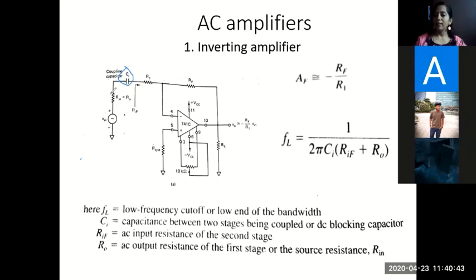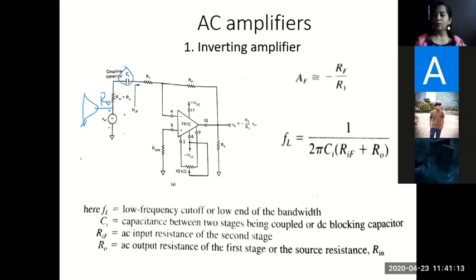R0 is the resistance of the signal generator — also called Rsig or Rin — which appears in series with this capacitor. If instead of a signal generator, another op-amp stage is used, the output resistance of that previous op-amp stage would be connected in series with this capacitor, so it is named R0. There are two resistors in series with Ci: the signal generator resistance and the input resistance of the amplifier stage.